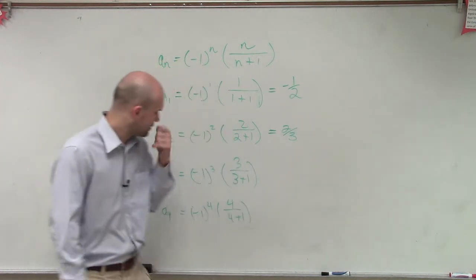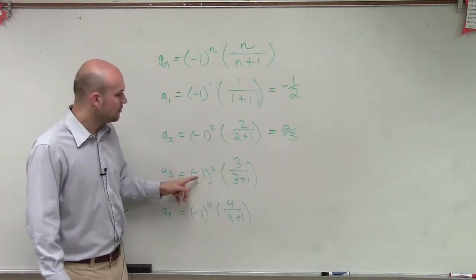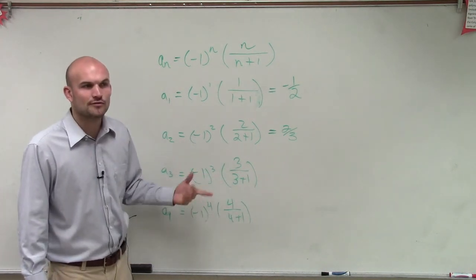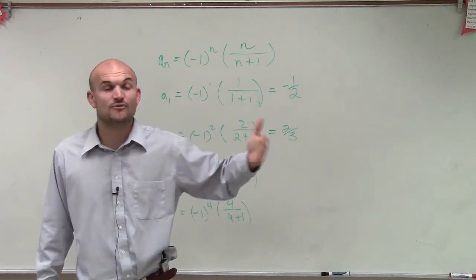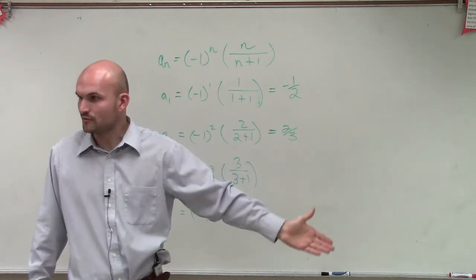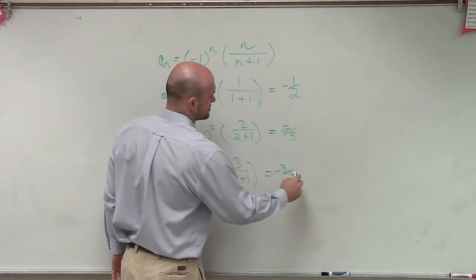And let's take a look at this. So now we have 3 divided by 3 plus 1 is 3 fourths, right? Well, now it's negative 1 multiplied by itself three times. So negative 1 times negative 1 is positive 1. Times negative 1 again is now going to be negative 1. Negative 1 times 3 fourths is negative 3 fourths.